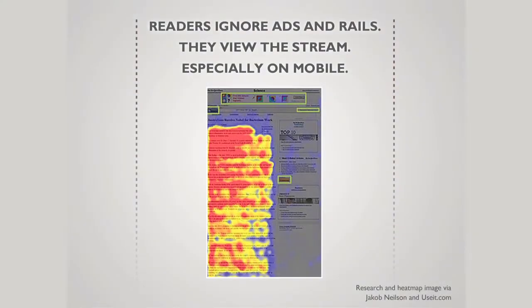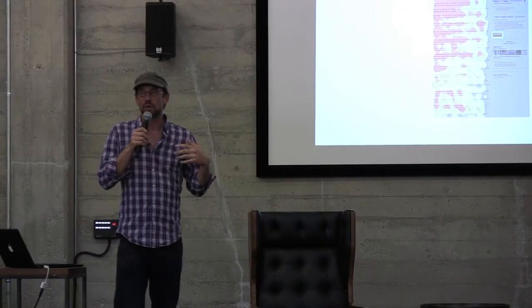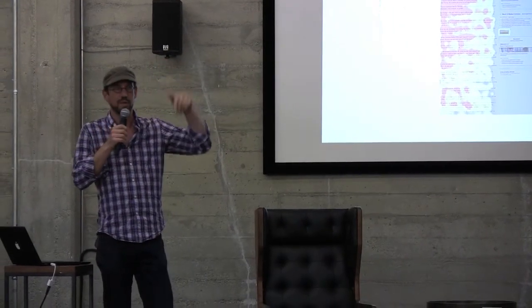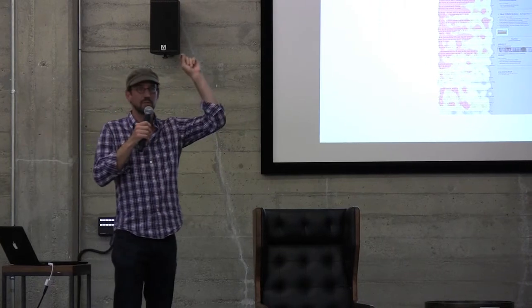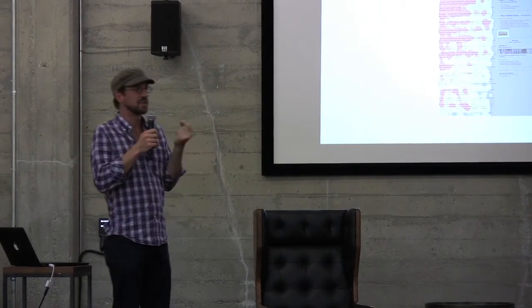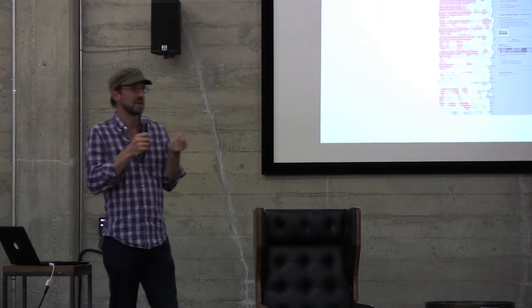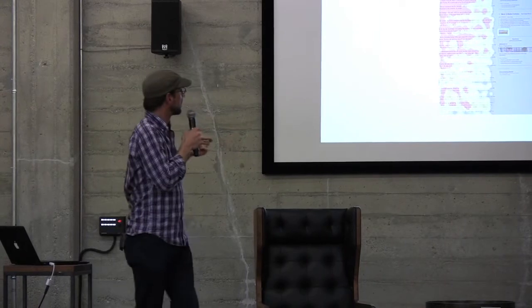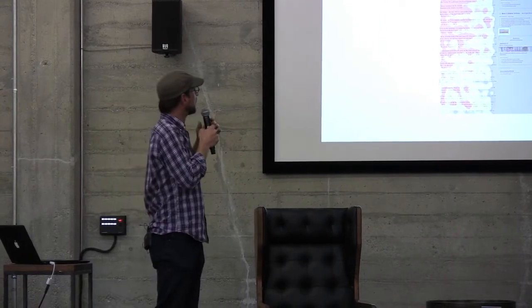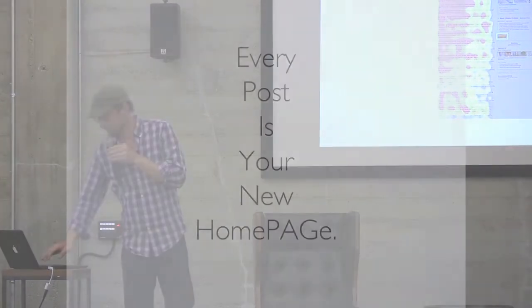Part of that problem is this heat map of what readers look at when they look at a news story. You can see readers are very good at ignoring all the stuff on the side and all the stuff at the top. They're very good at reading the stream. So the stream is actually the thing you have to focus on. You can stick all you want into the sidebars, but largely that's not where people are going to look.